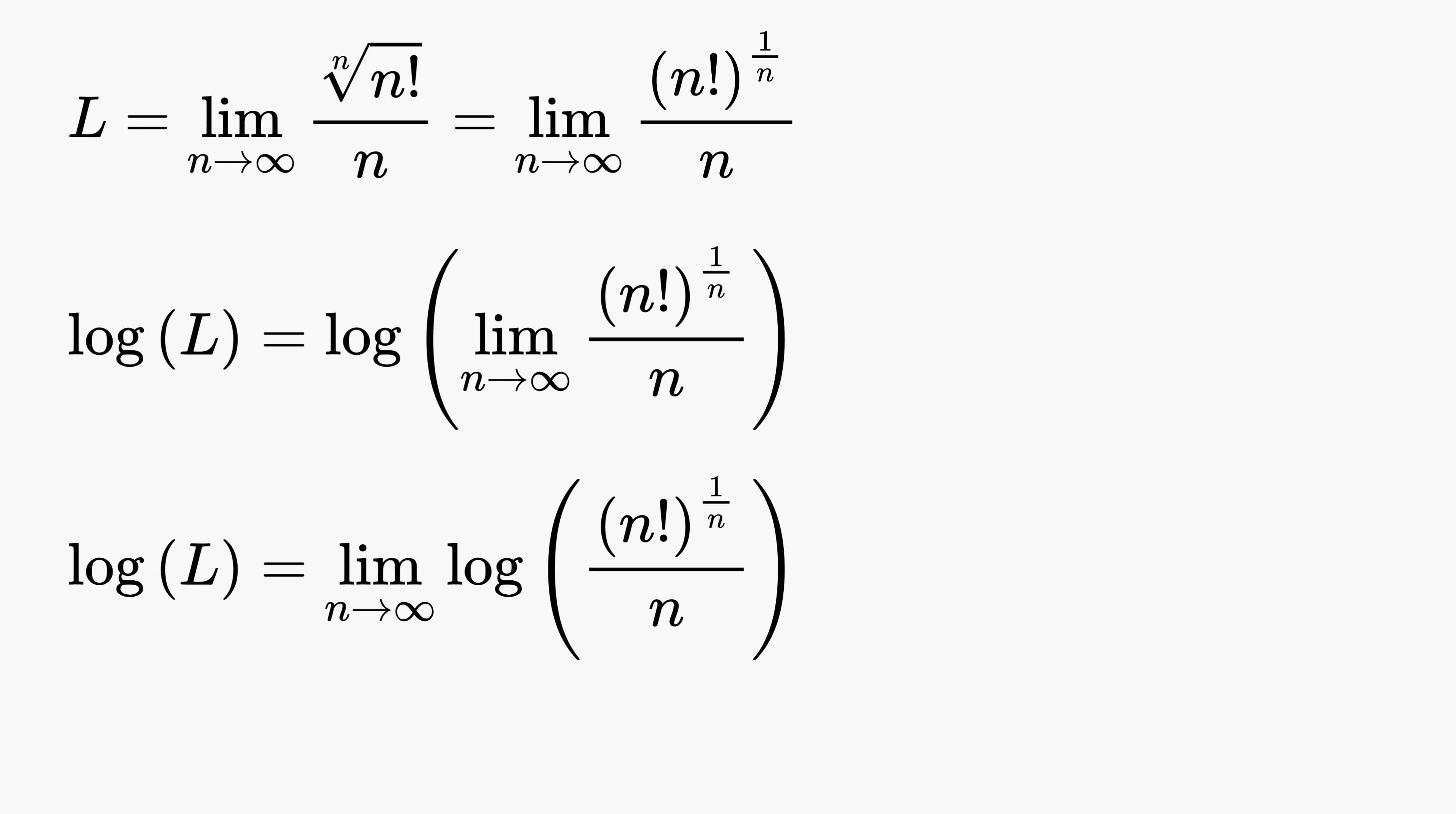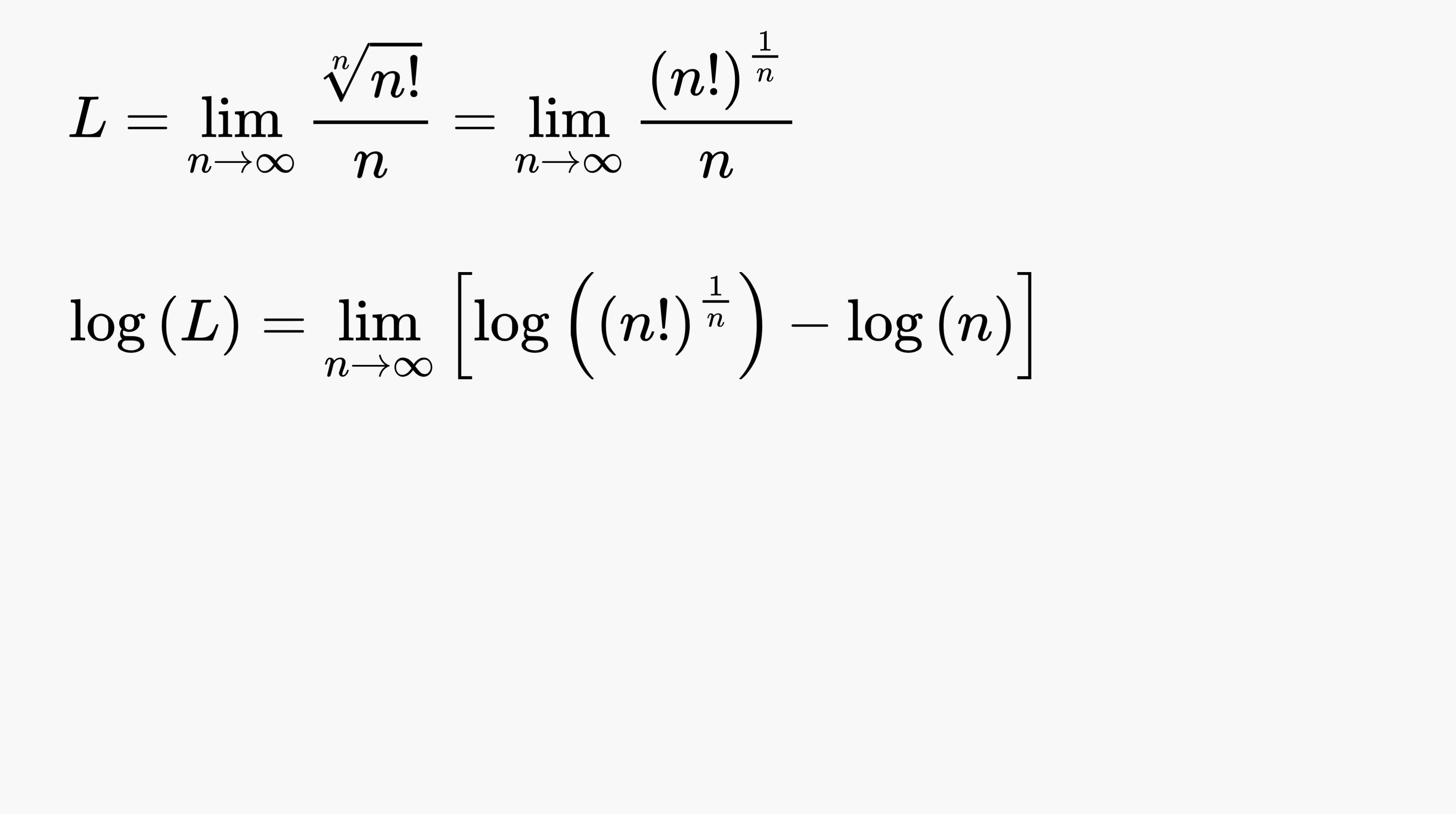Applying the quotient rule splits our expression into the natural log of the numerator minus the natural log of the denominator. Then applying the power rule allows us to pull this 1/n exponent outside the logarithm. So now the expression becomes 1/n multiplied by log(n!) minus log(n). This already looks much cleaner than what we started with.